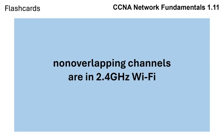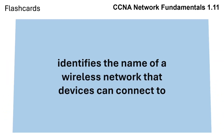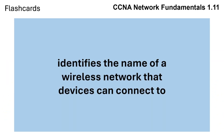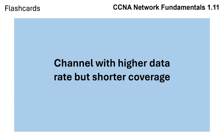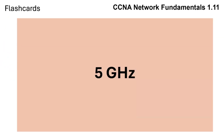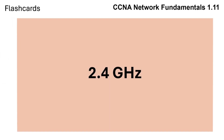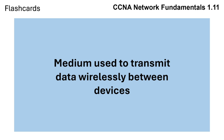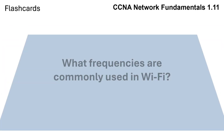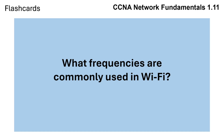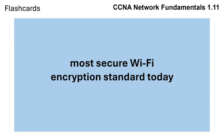Review questions: What are the non-overlapping channels in 2.4 GHz Wi-Fi? What identifies the name of a wireless network that devices can connect to? What is the channel with higher data rate but shorter coverage? What is the channel with lower data rate but larger coverage? What is the medium used to transmit data wirelessly between devices? What frequencies are commonly used in Wi-Fi? What is the most secure Wi-Fi encryption standard today?